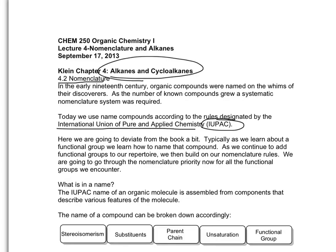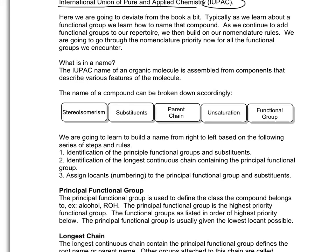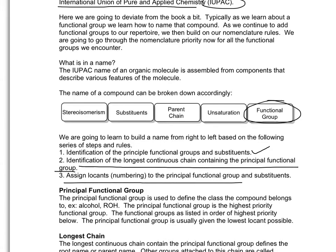So what's in a name? We can break down the name into five components: stereoisomerism, substituents, the parent chain, unsaturations, and the functional group. We're going to learn to build the name starting with the functional group, followed by unsaturations, then the parent chain, and then the substituents. First, you're going to identify the principal functional group and the substituents. Then you're going to identify the longest continuous chain that contains the principal functional group. Then you need to assign locants, or numbering, to the principal functional group and the substituents.